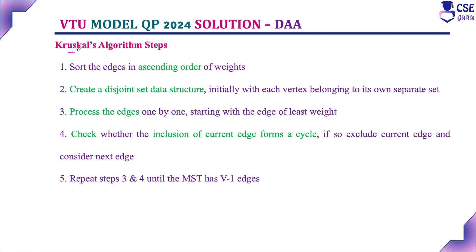The steps to implement Kruskal's algorithm: the first step is to sort the edges in ascending order. For the given graph, we consider the edges with their weights and sort them in ascending order, starting from the smallest weight to the largest weight.